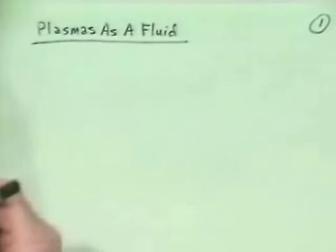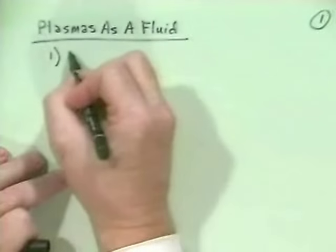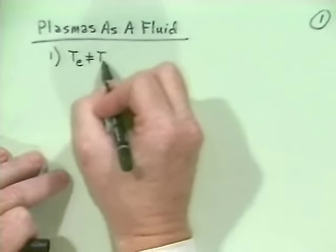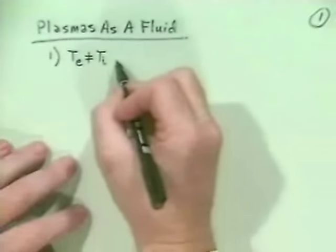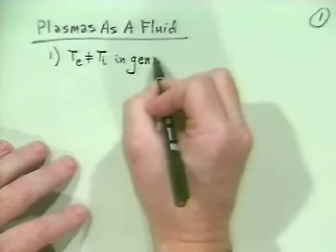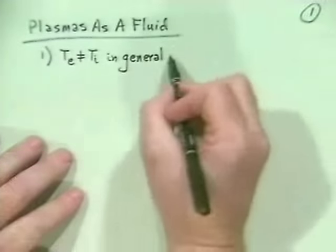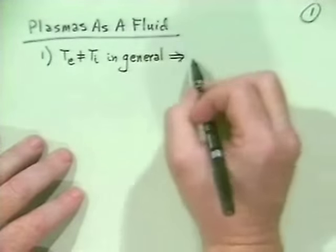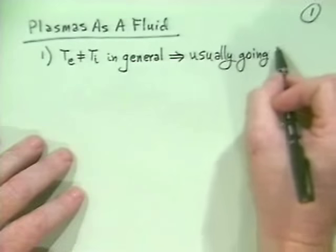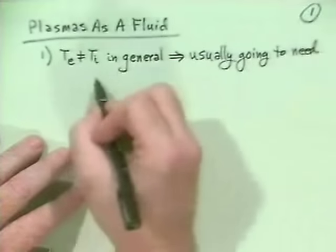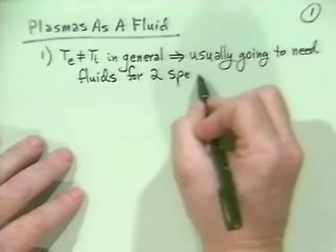Some general observations: first, in this plasma we have two species — electrons and ions, typically electrons and protons. In general, we can expect that the electron temperature does not equal the ion temperature. Because of that, we're going to need fluid equations for two species, namely electrons and ions.